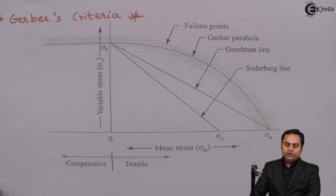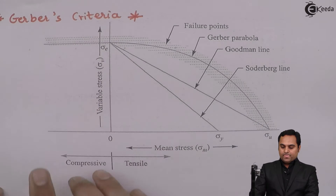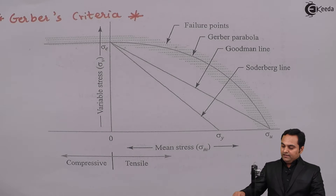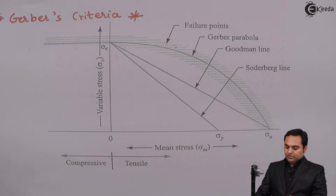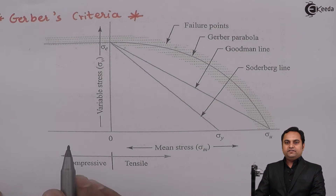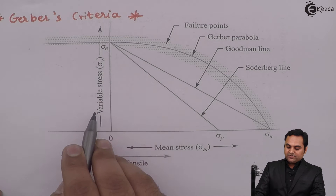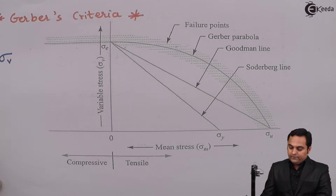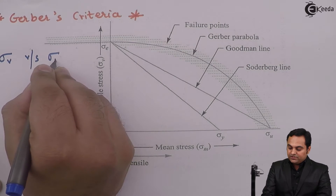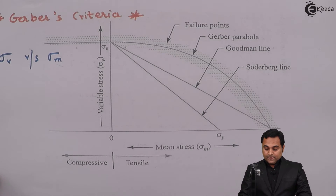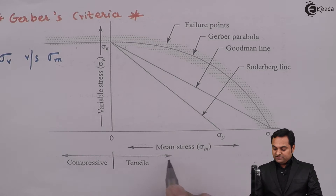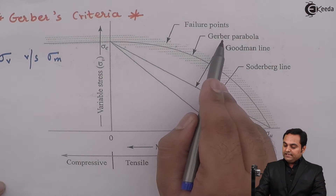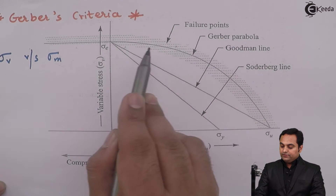In this video we will see what is meant by Gerber's criteria. Gerber's criteria is used in case of design and it is one of the simplest methods. It can be understood as a graph of variable stress Sigma V versus mean stress Sigma M. On this graph the stresses on the positive x-axis are tensile and the negative x-axis represents compressive stress.